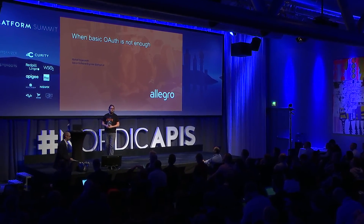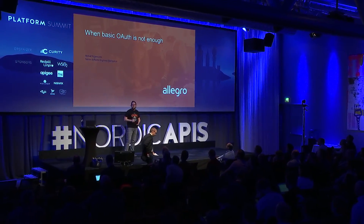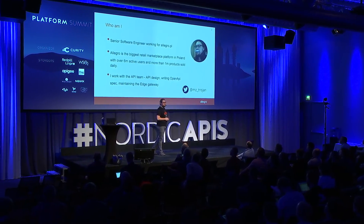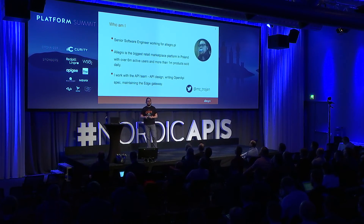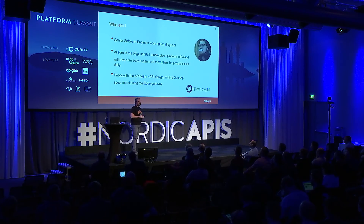Hi everyone. I'm Michał Trojanowski. I work for Allegro PL as a senior developer. Allegro is the biggest Polish retail marketplace — we have around 6 million users and serve around 1 million transactions every day. I'm part of the API team, and we have two different purposes at the company: we help other teams develop APIs and write documentation, and we also maintain our edge API gateway.